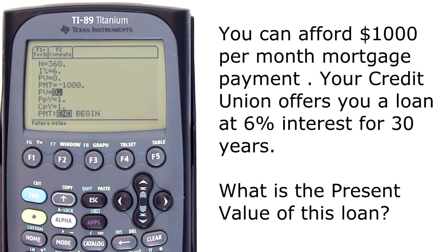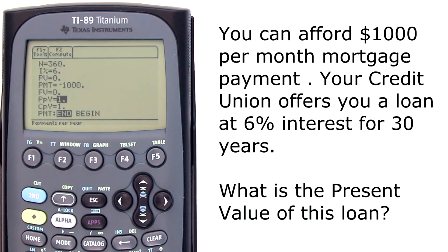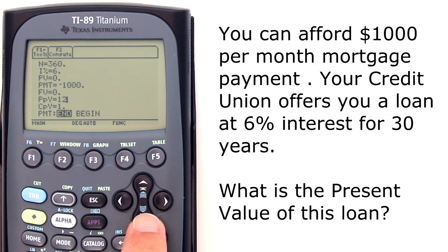FV is future value. After 30 years the loan balance is zero — you paid off the loan — so enter zero. PPY is payments per year; you are paying monthly, so enter 12. CPY is compoundings per year; since we are paying monthly, we assume monthly compounding, so enter 12.